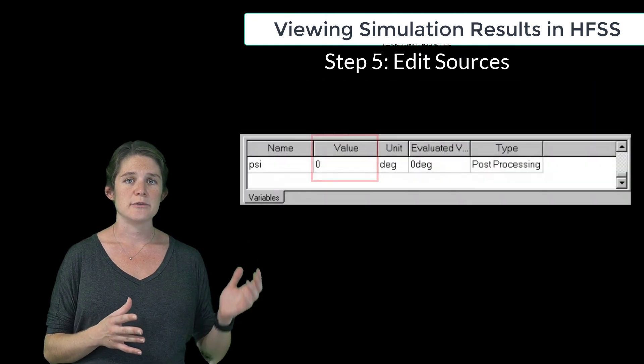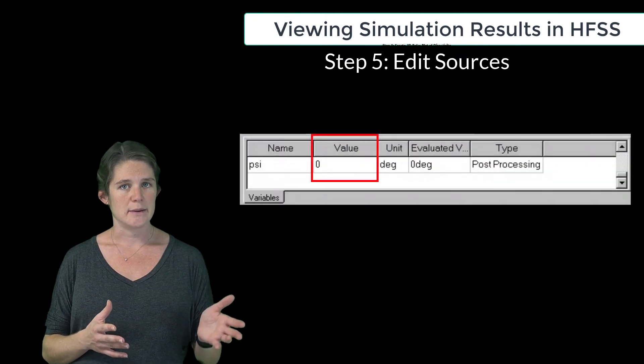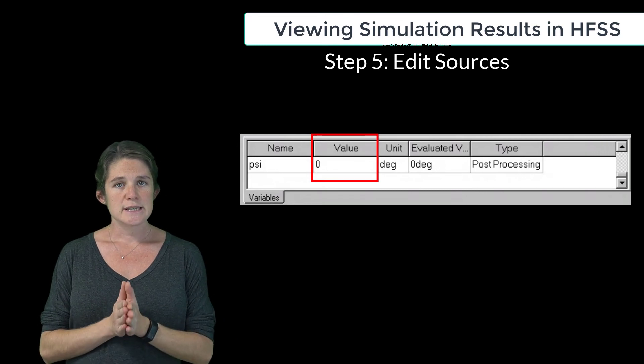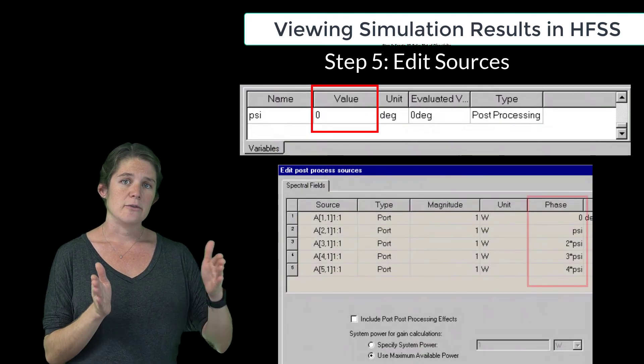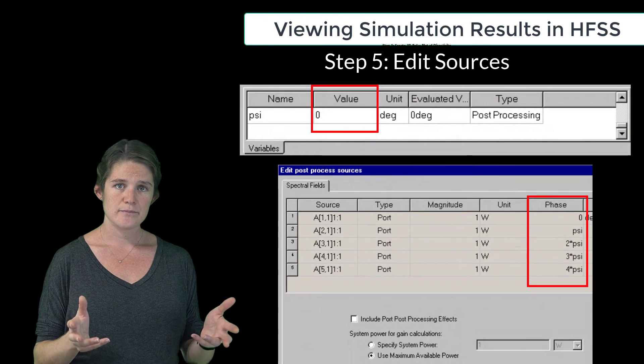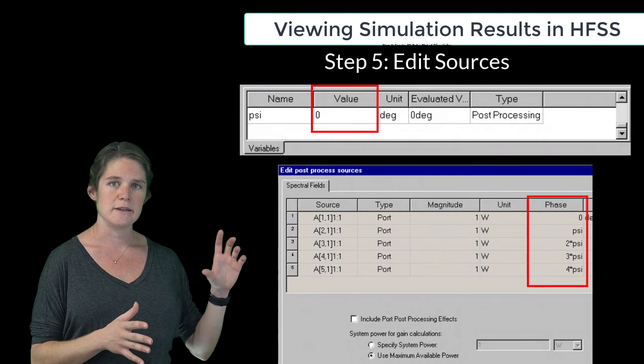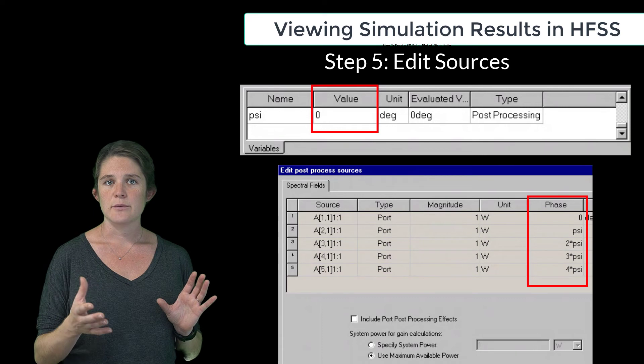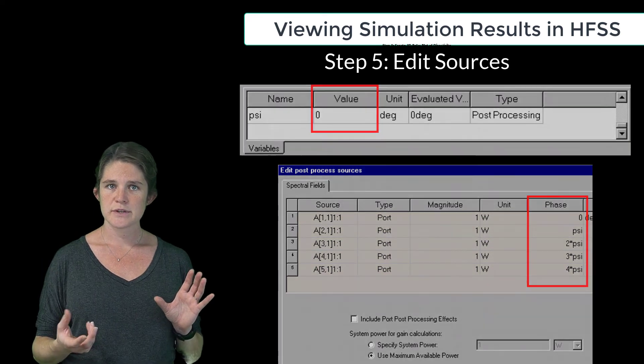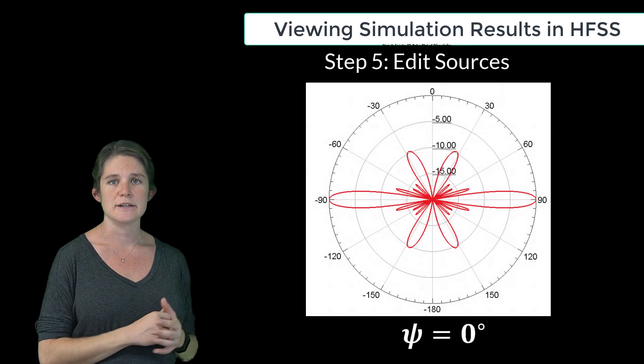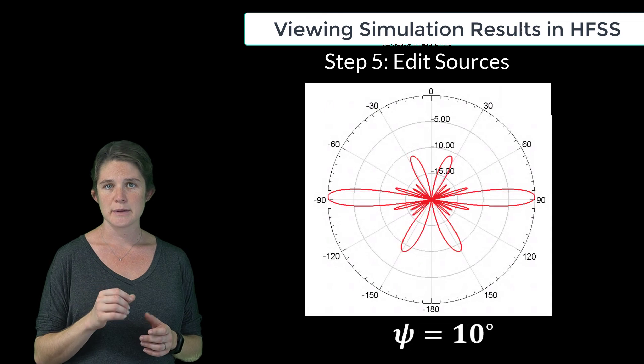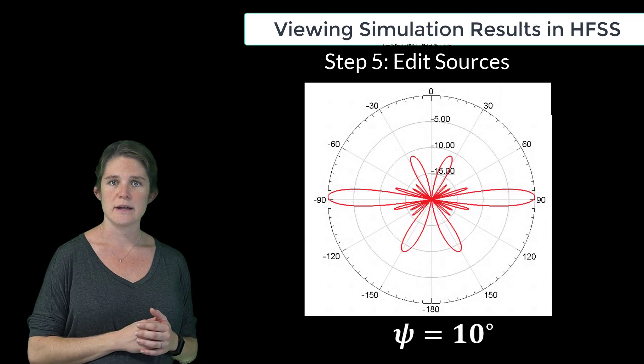So in this case, we defined the linearly varying feed angle as Psi. So if we change the value of Psi in the variables list, our directivity plot will vary in response. So here is the variation in the directivity plot in the XY plane resulting from increasing values of Psi.